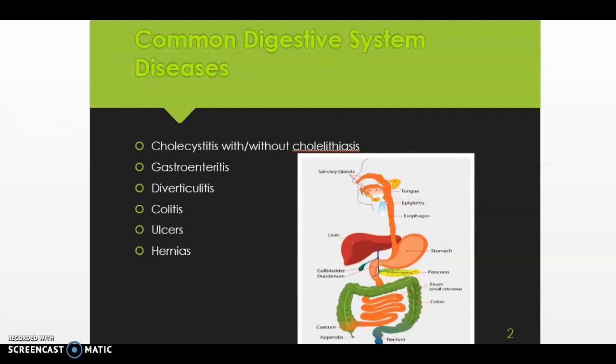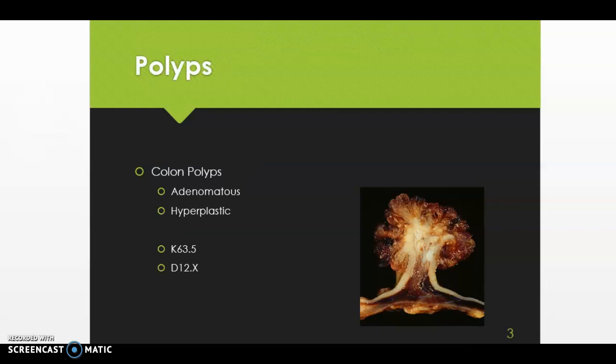A common condition we see as a coder is polyps, commonly in the colon or the rectum. When we're coding polyps, we need to know if they were adenomatosis or hyperplastic. Polyps are growths that will grow on the lining of the colon, and the type of polyp is used to predict if that will develop into a malignancy or cancer.